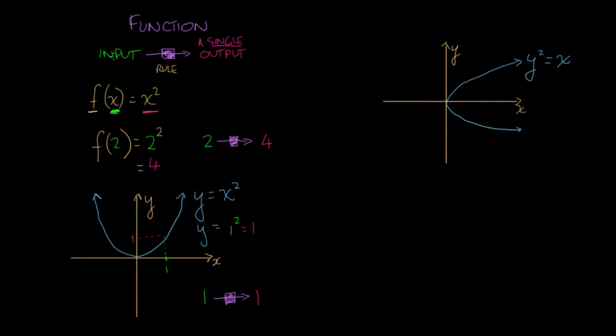Now, I defined a function before as a machine or a rule that specifies for every input there is a single output. So you might have guessed that something that is not a function does the converse. So if we plug an input into this machine, if we have a rule that for one input specifies more than one output, so we've got two outputs coming here, then this is not a function, it's still a rule, but it's not a function.